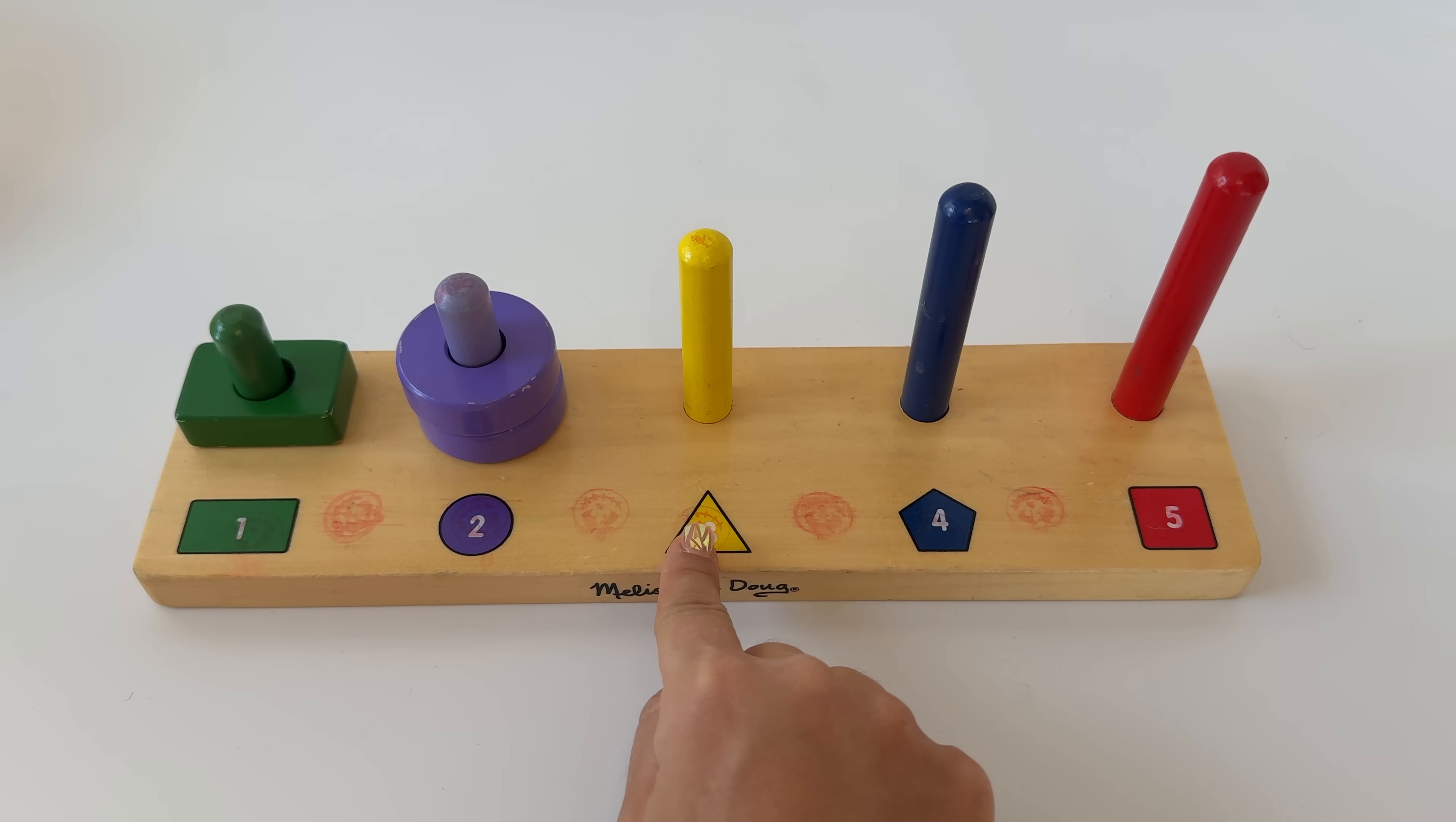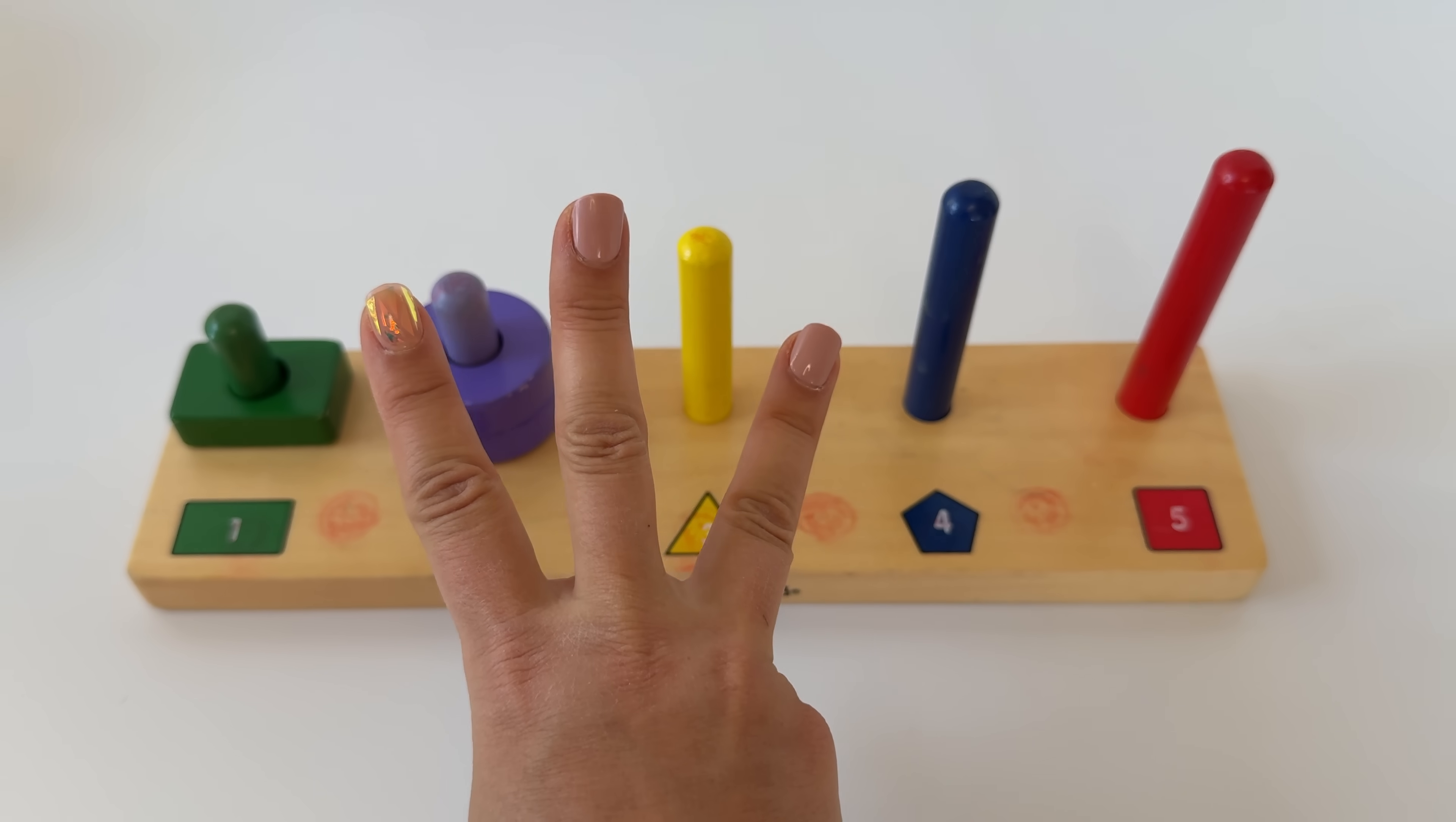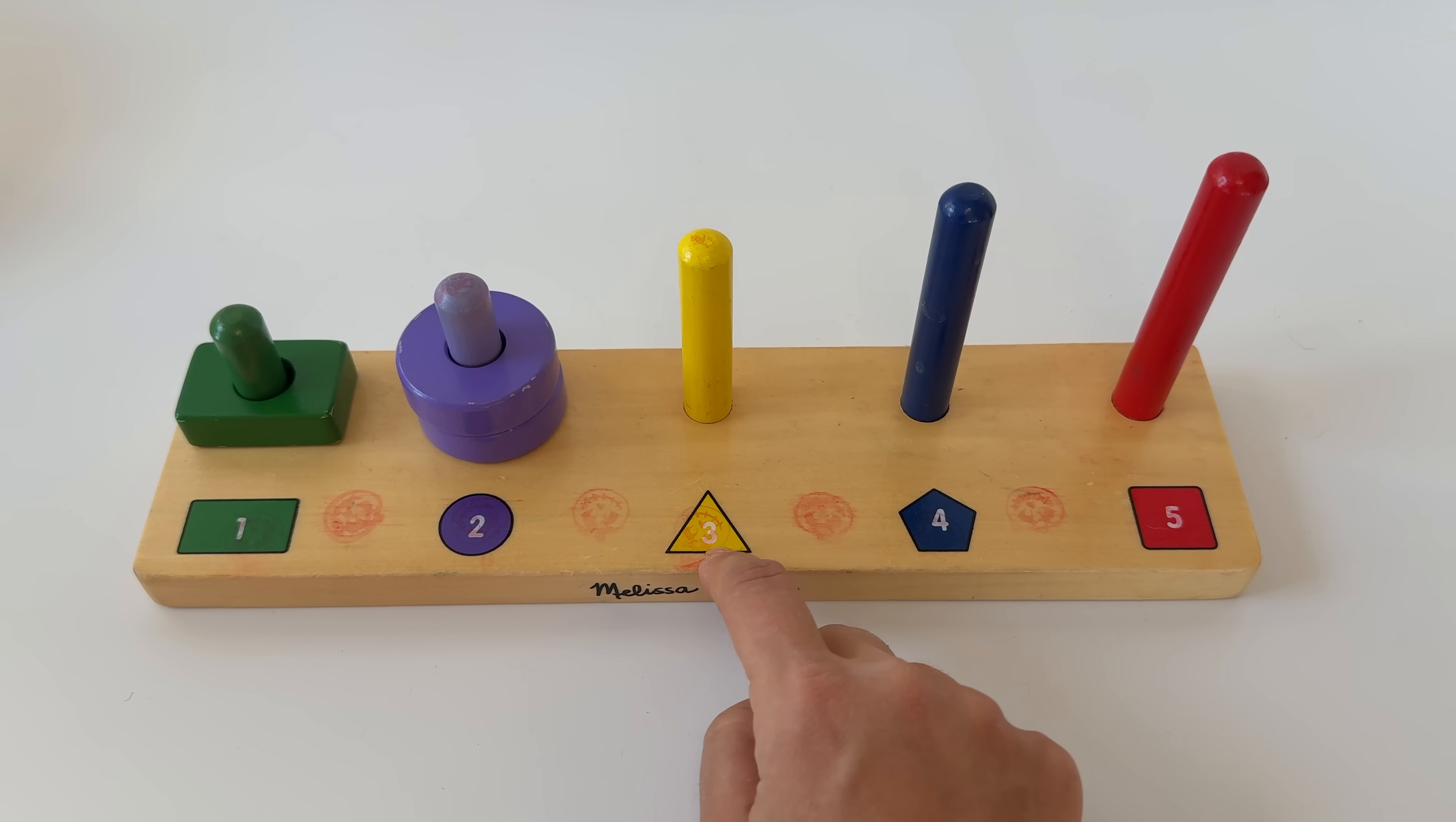What number comes next? Let's count. One, two, three. Three. Let's count to three with our fingers. One, two, three. Did you do it with me? Nice. And what color is the three? It's yellow. And the shape is a triangle.